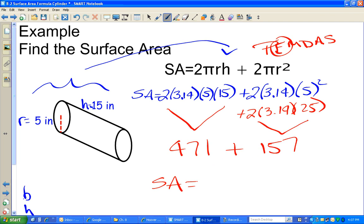So now add these together. 471 plus 157. And I get 628 inches squared. And that's my answer.